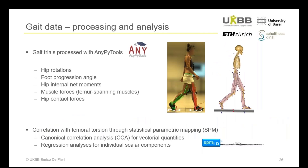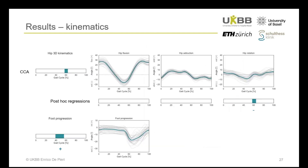Coming back to the gait data from our healthy volunteers, we processed all data with AnyPy tools. We investigated hip rotations, foot progression angle, hip internal net moments, muscle forces, and hip contact forces, exploring potential correlations with femoral torsion through statistical parametric mapping using canonical correlation analysis and regression analysis. We found a correlation between femoral torsion and hip three-dimensional kinematics during the transition between stance and swing phase, specifically a negative correlation between femoral torsion and hip external rotation, and a positive correlation with foot progression angle in late stance.